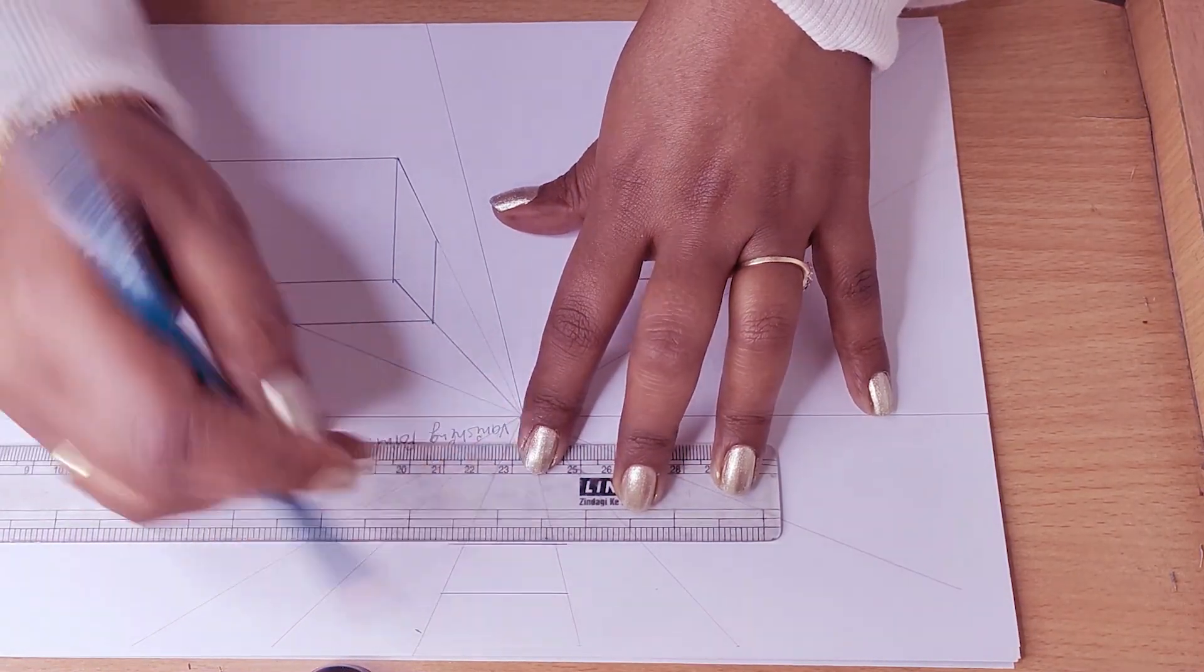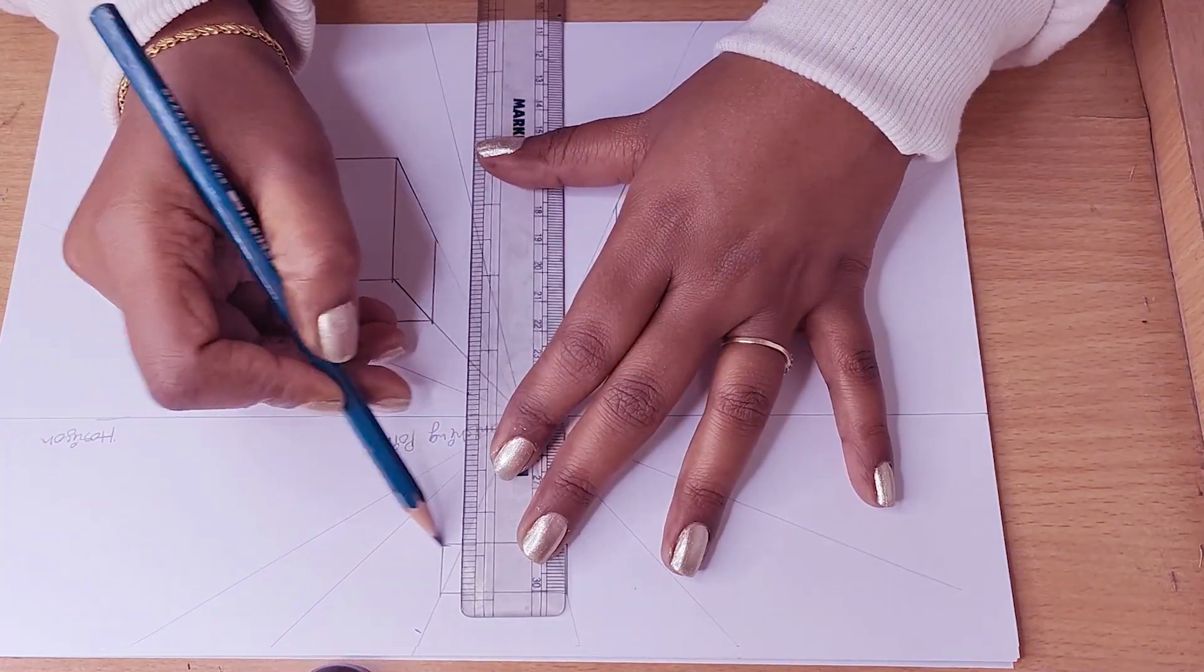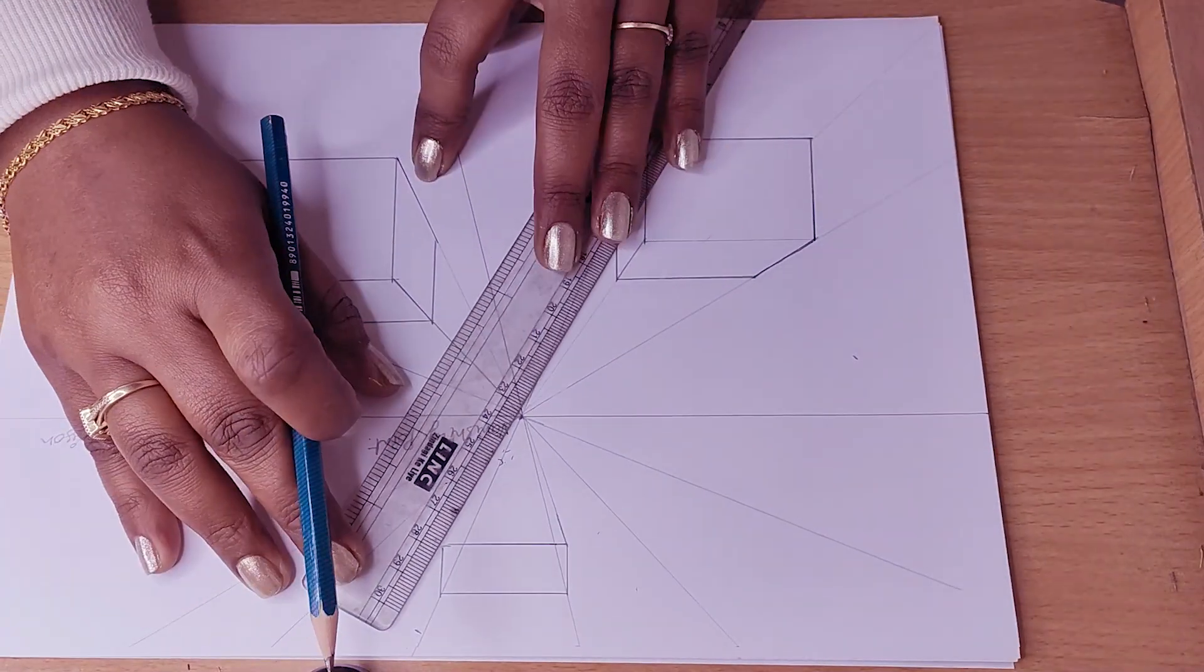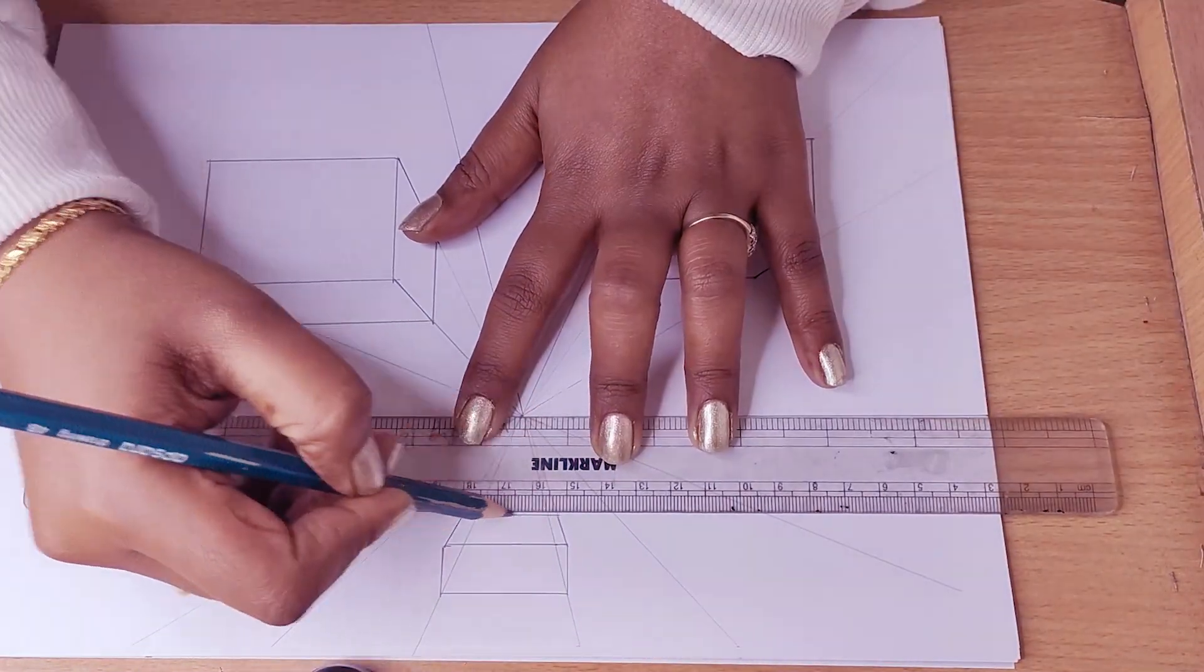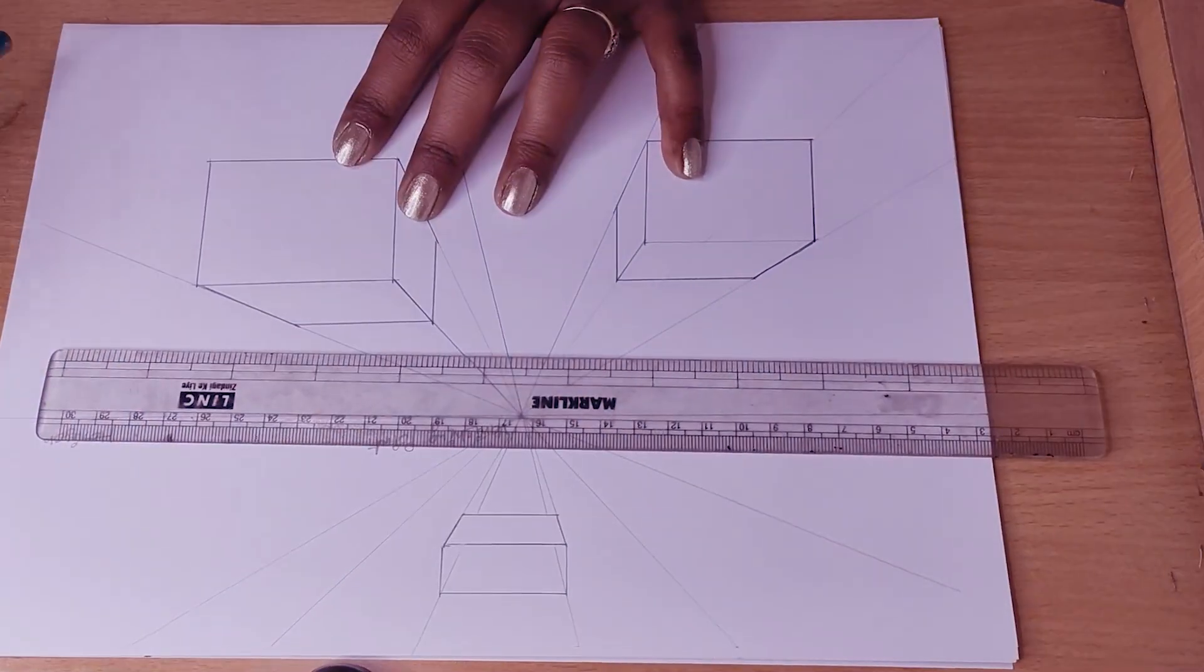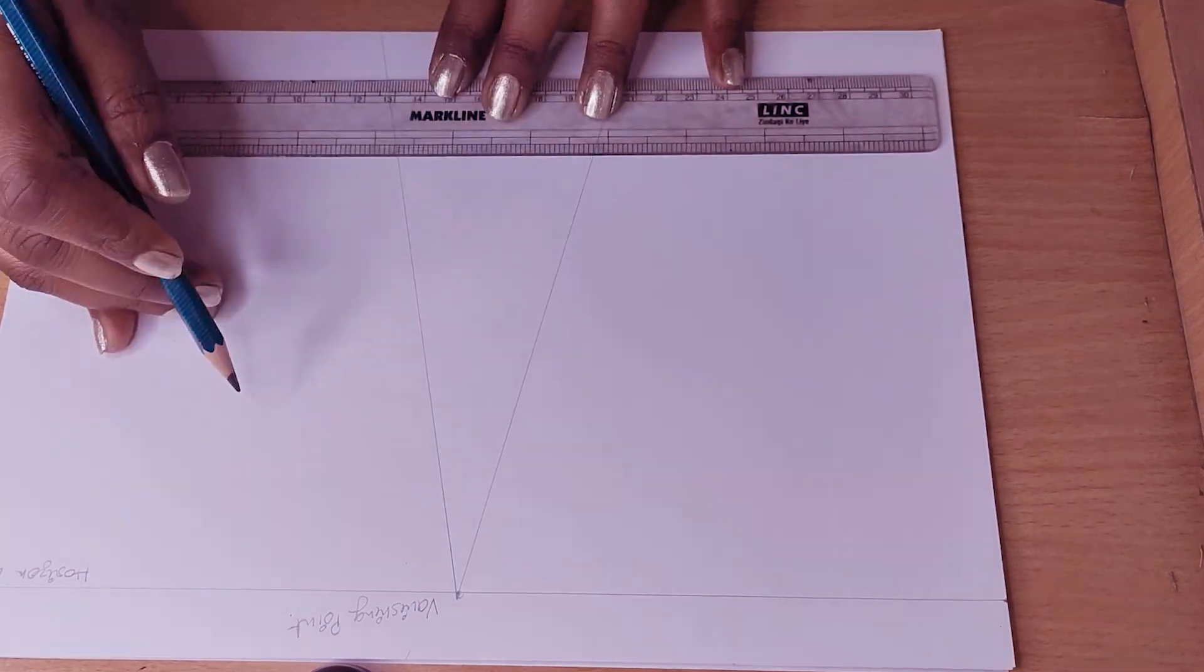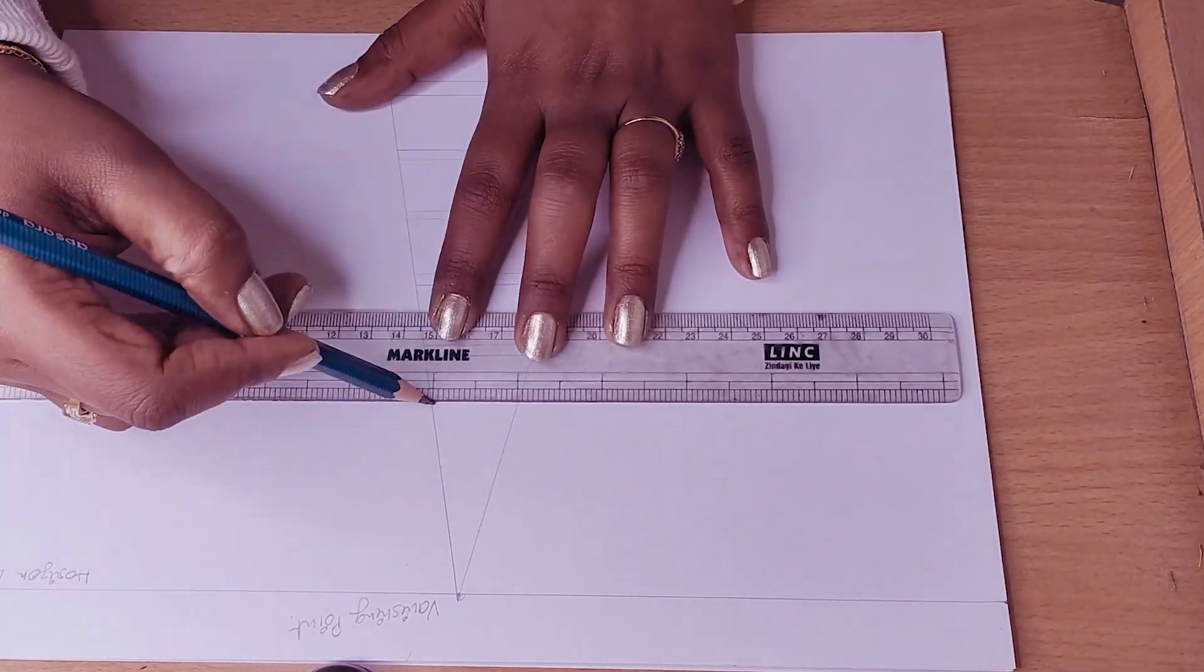And that point we call vanishing point. Here I draw some pictures using pencil and scale, where you can see a slanting line which is a horizon line, and in this horizon line you can see a point where all lines meet together. That is called vanishing point. We can shift vanishing point to anywhere within the horizon line.